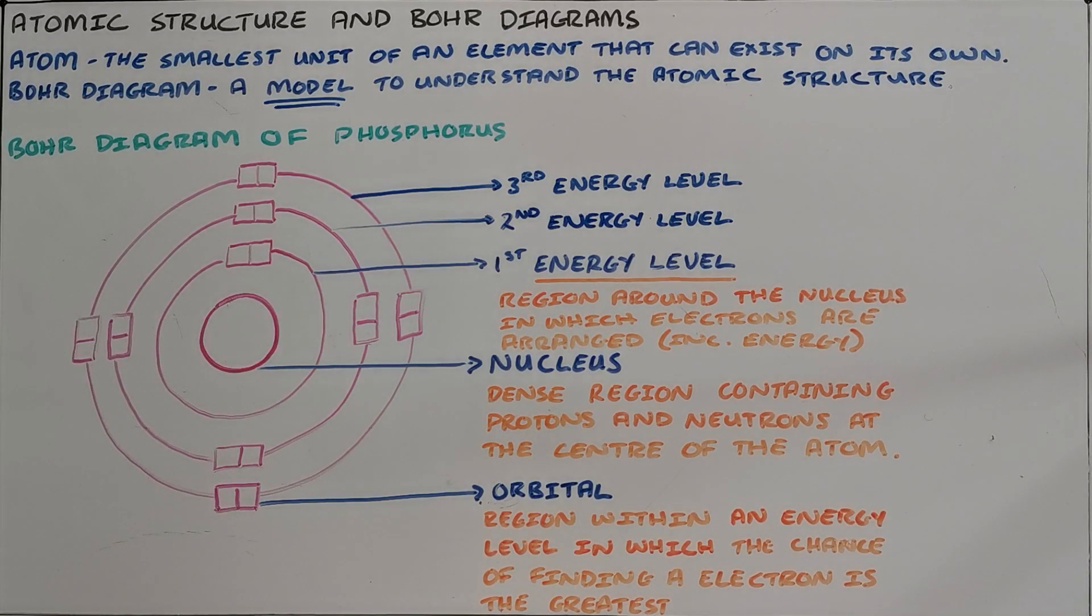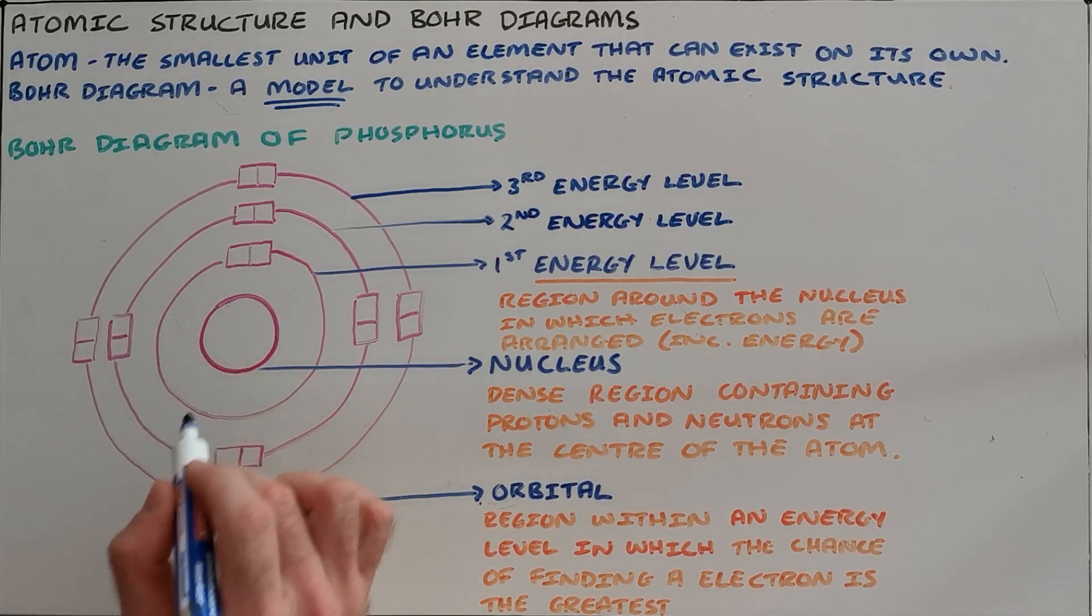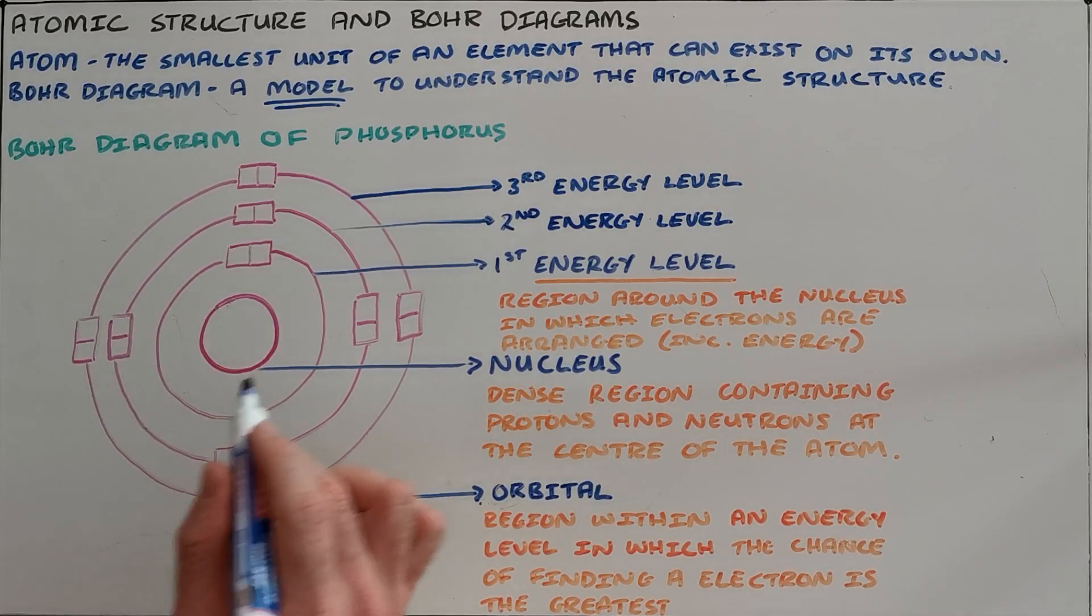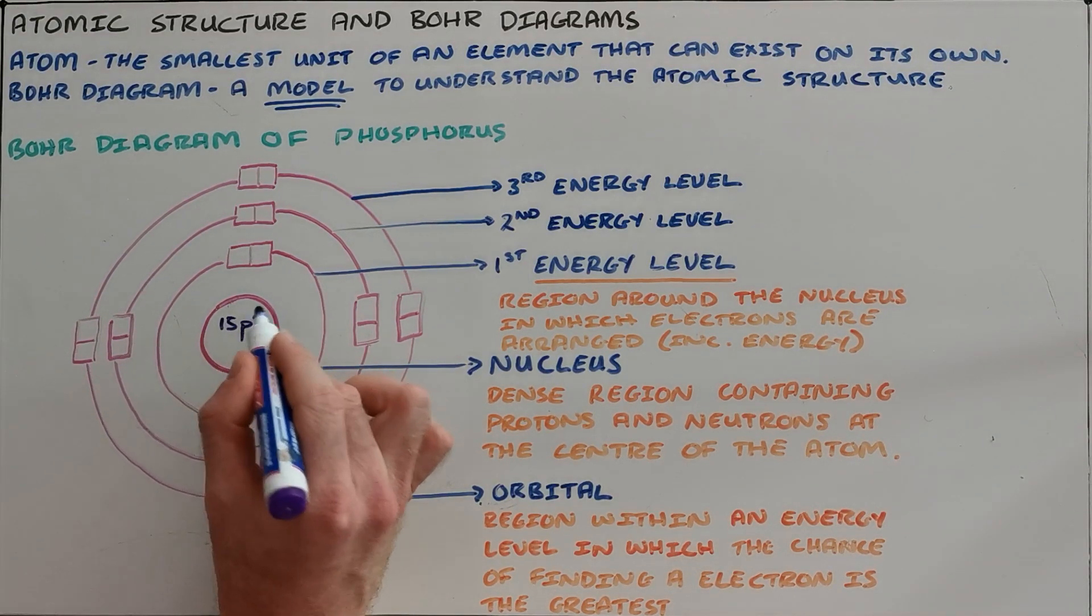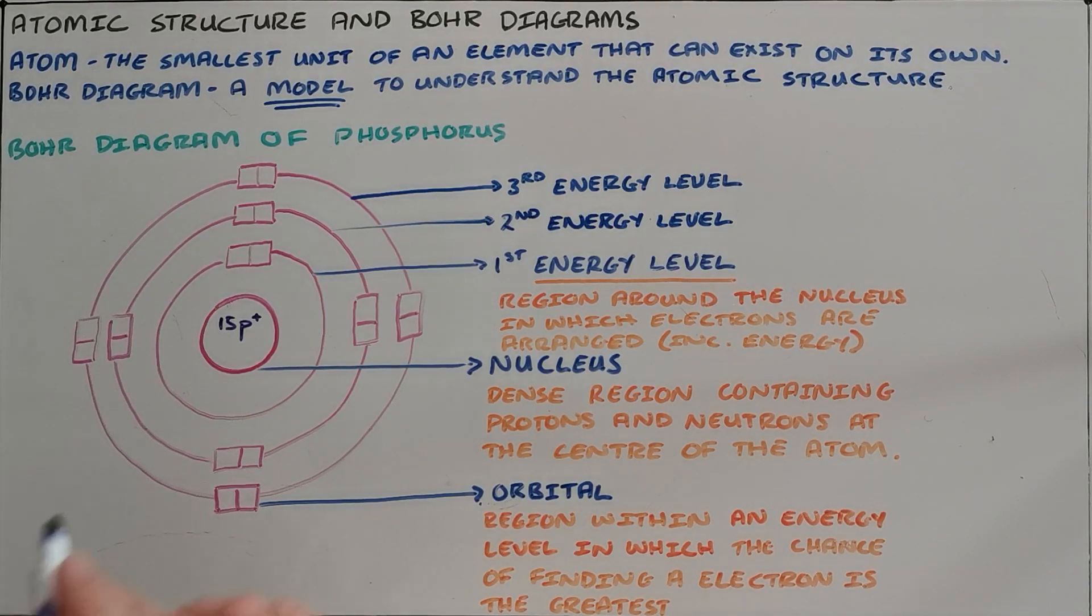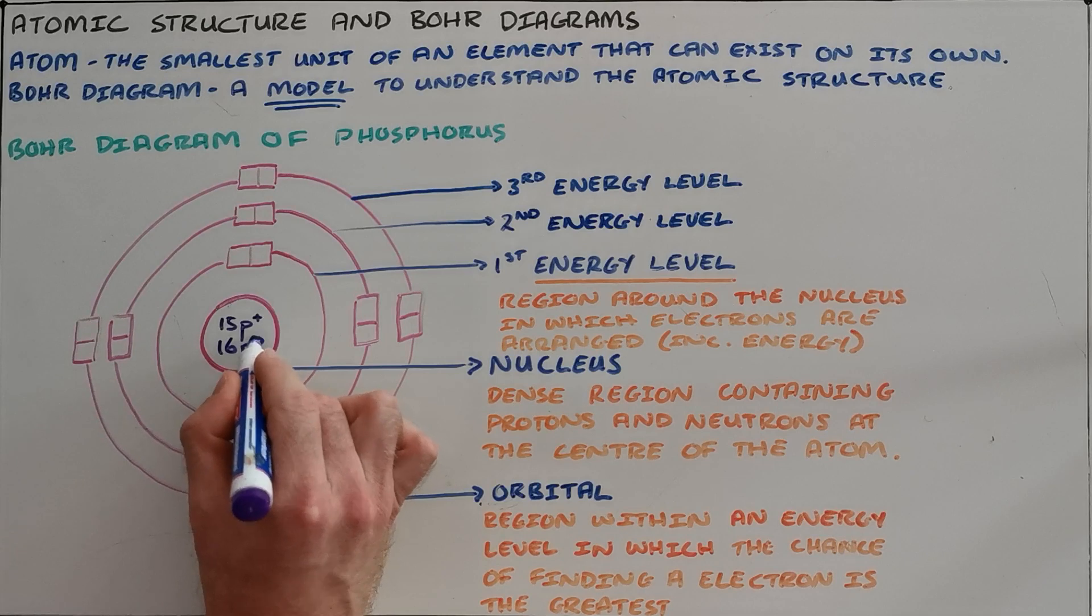There are two important regions when looking at an atom. The first in our Bohr diagram here of a phosphorus atom is the nucleus. The nucleus is the dense region that contains the protons and neutrons at the center of the atom. When we draw a Bohr diagram, we always show that the protons and neutrons are found in the nucleus. For phosphorus, there are 15 protons in the nucleus and 16 neutrons.